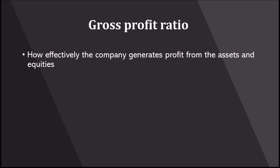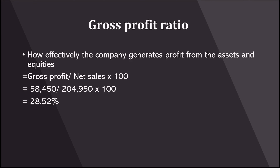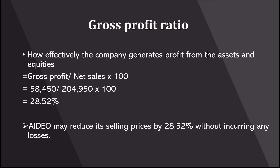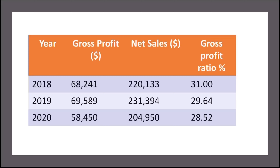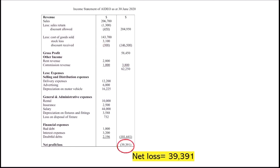Next, the gross profit ratio shows how effectively the company is generating profit. IDEO's gross profit ratio is 28.52%, which suggests that the company can reduce their selling prices by that amount without incurring any losses. This may seem good; however, when compared to previous years, it has been showing a decremental trend, indicating that the company is generating less profit. Moreover, in this financial period, the business suffers a net loss which concerns their financial sustainability.